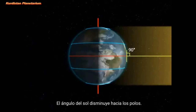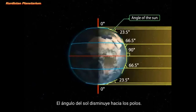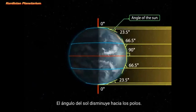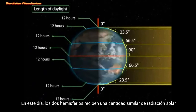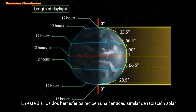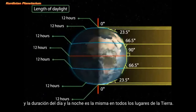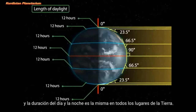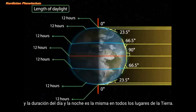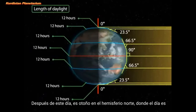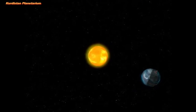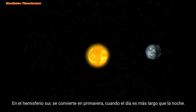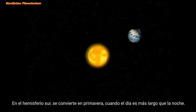The angle of the Sun decreases towards the poles. On this day, the two hemispheres receive a similar amount of solar radiation and the length of day and night is the same at all places on the earth. After this day, it is autumn in the northern hemisphere where the day is shorter than the night. In the southern hemisphere it becomes spring, when the day is longer than the night.